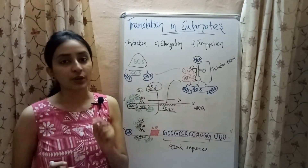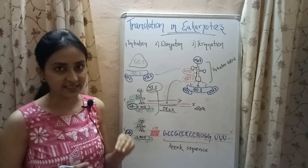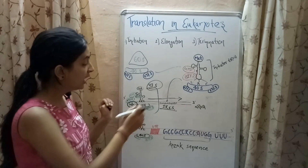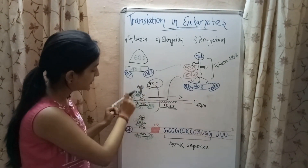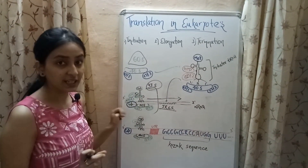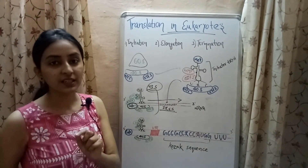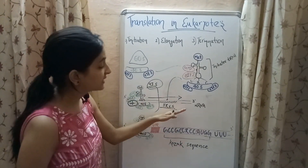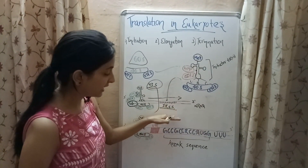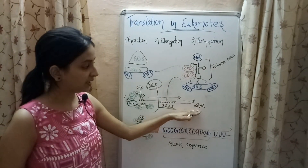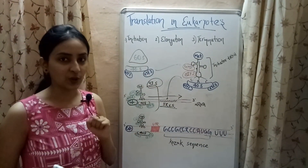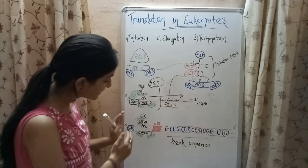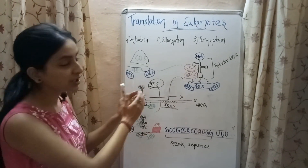So there are two methods of initiation in eukaryotes. In cap-dependent initiation, the initiator tRNA attached to the 40S subunit gets attached to the cap region at the 5' end of the mRNA. In cap-independent initiation, this structure instead attaches to the IRES — the Internal Ribosome Entry Site — present in the mRNA, and then initiates translation.